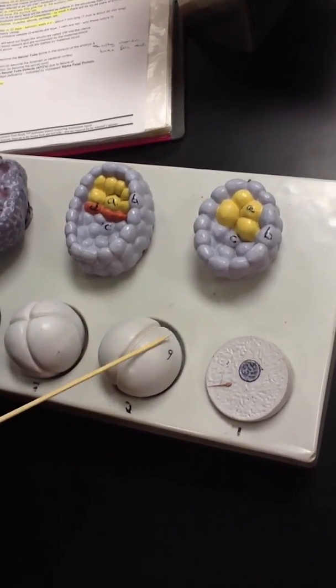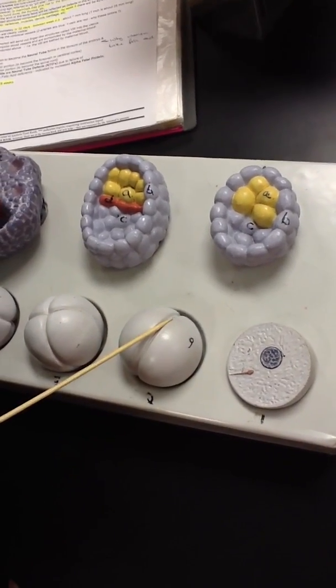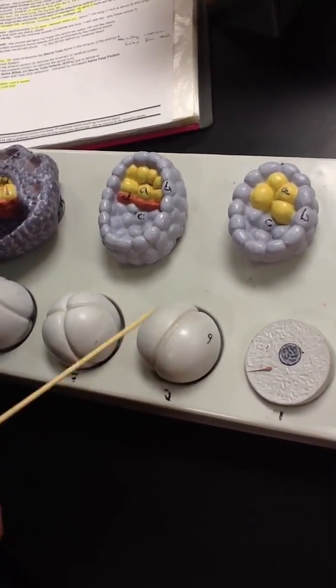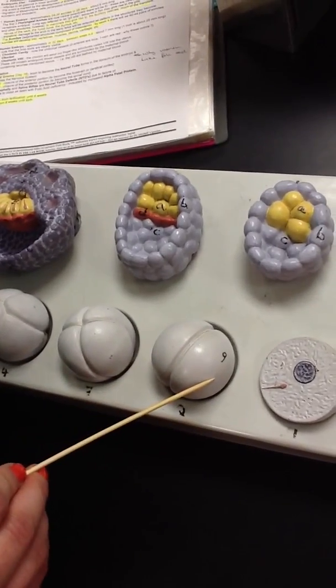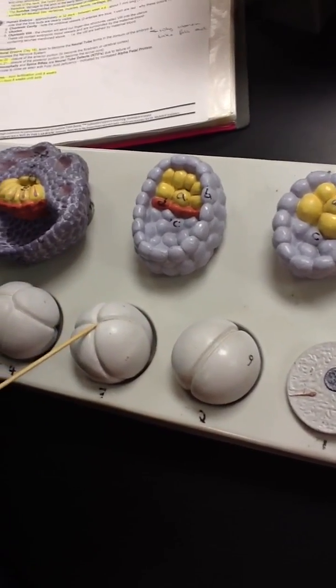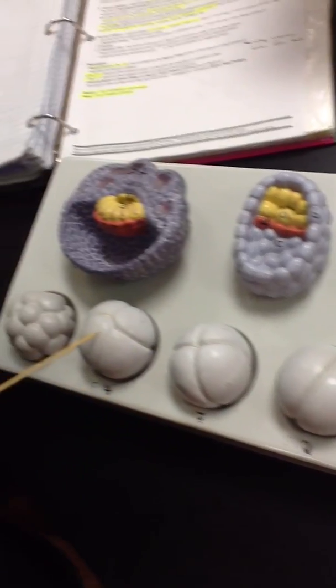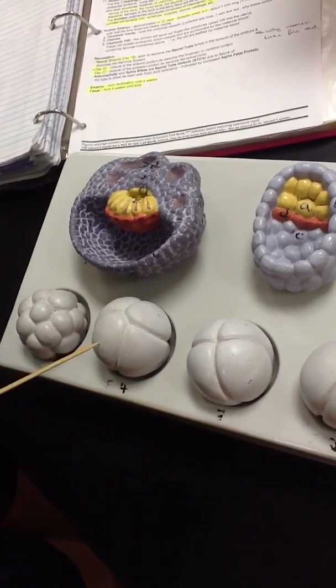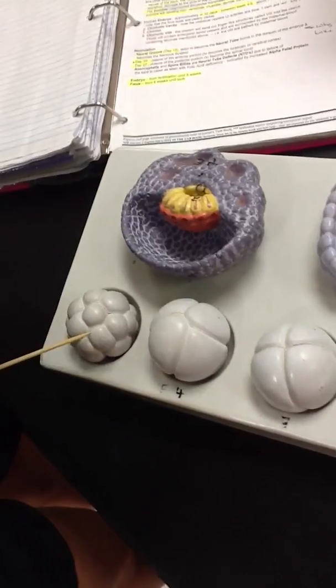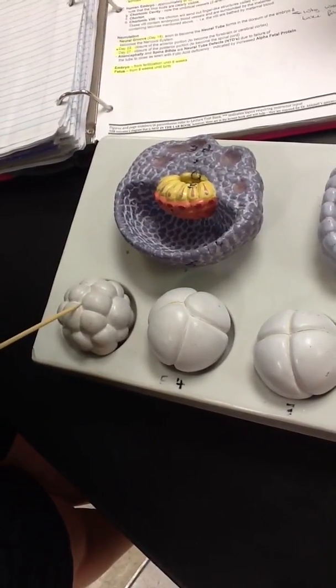Then we have the two-cell embryo. This occurs approximately 30 hours after fertilization. Each cell is called a blastomere. Then we have a four-cell embryo. Again, each cell is a blastomere. And an eight-cell embryo. Each cell is a blastomere. And then we have the morula, which is about 16 blastomeres.